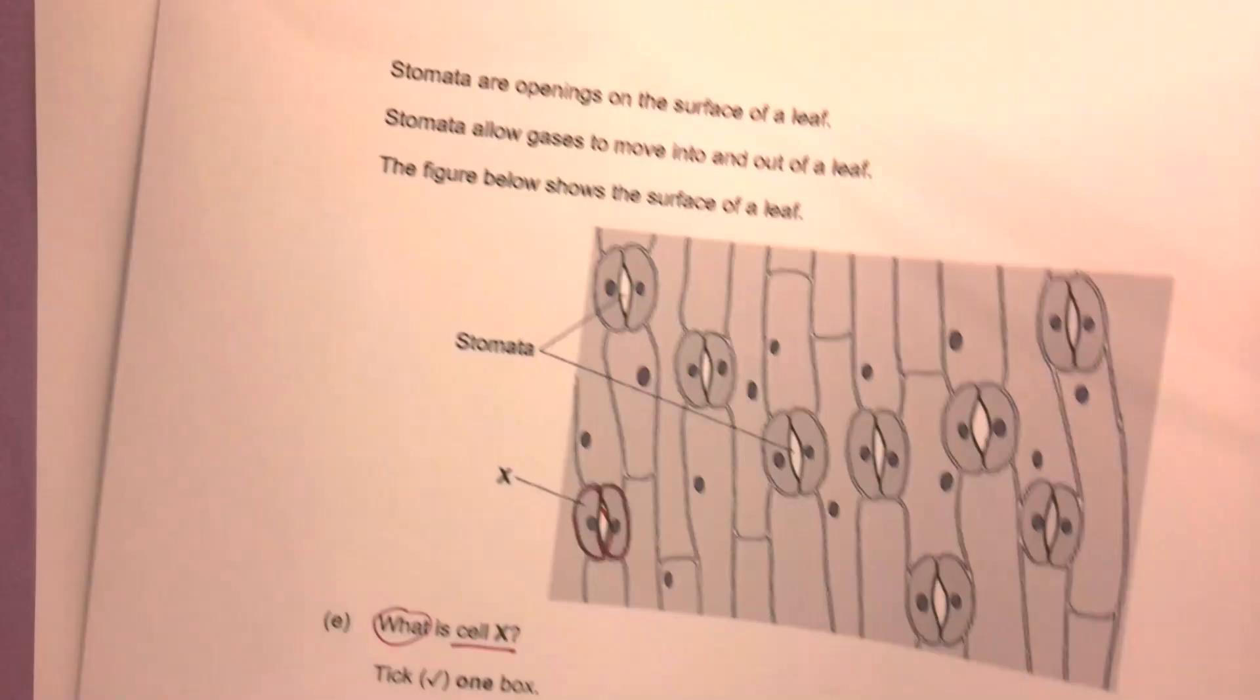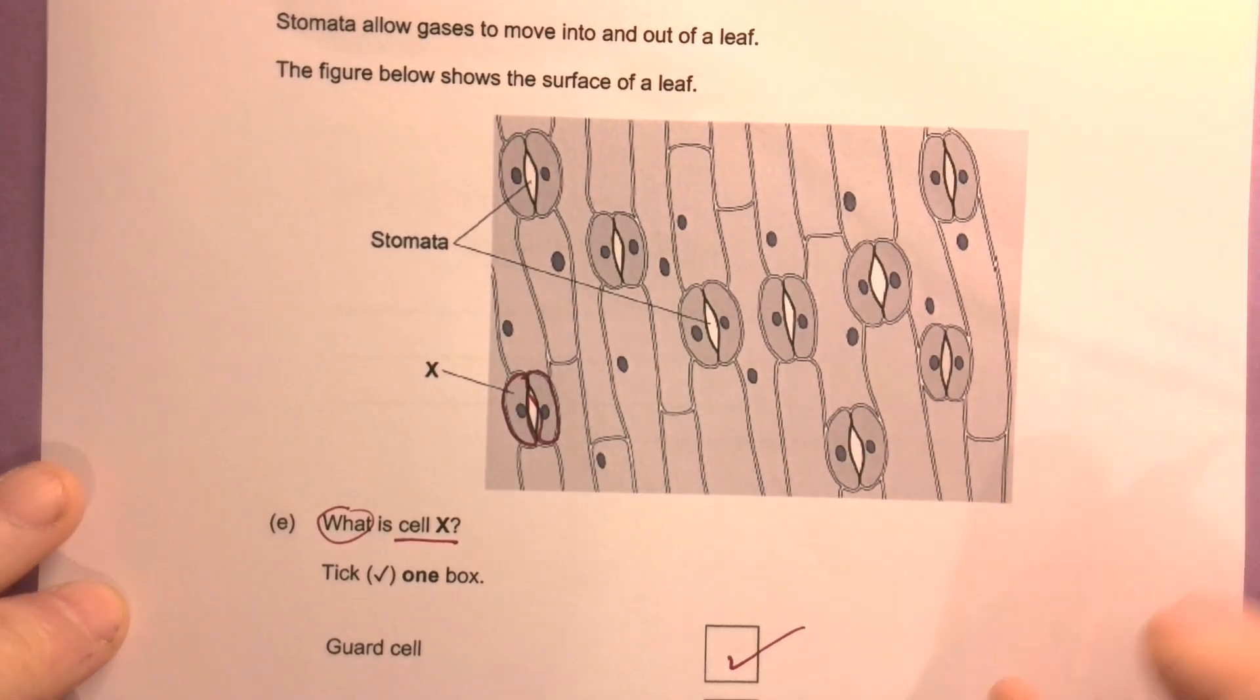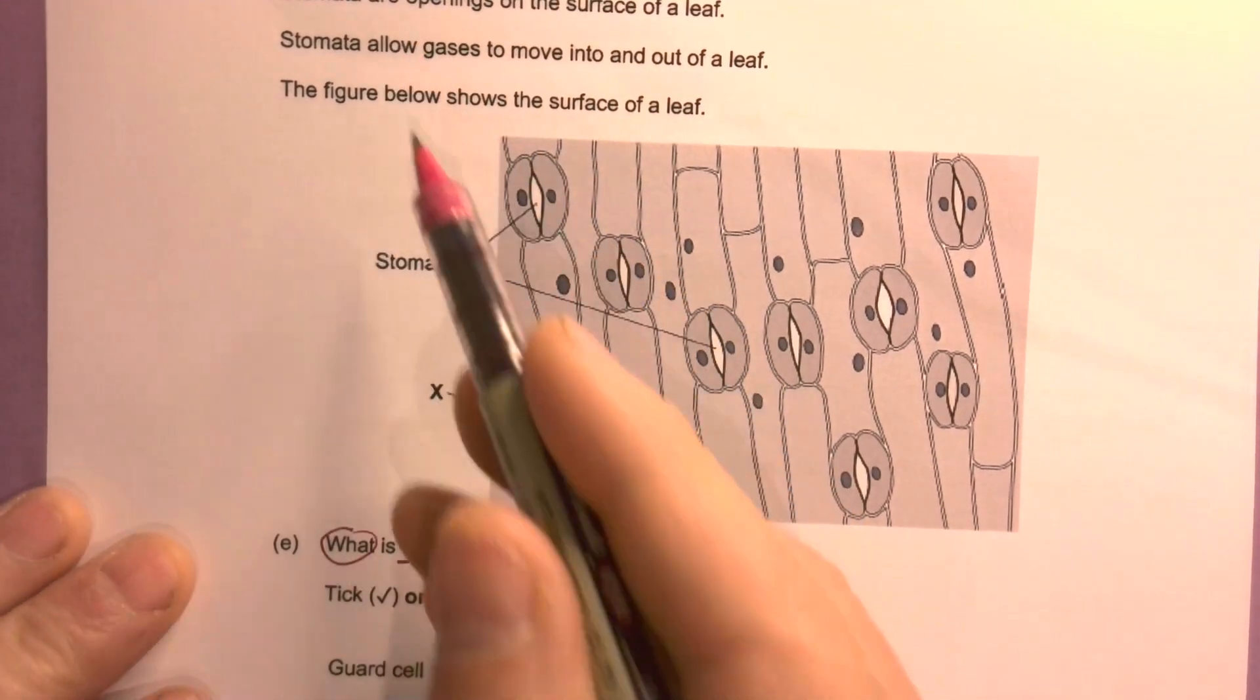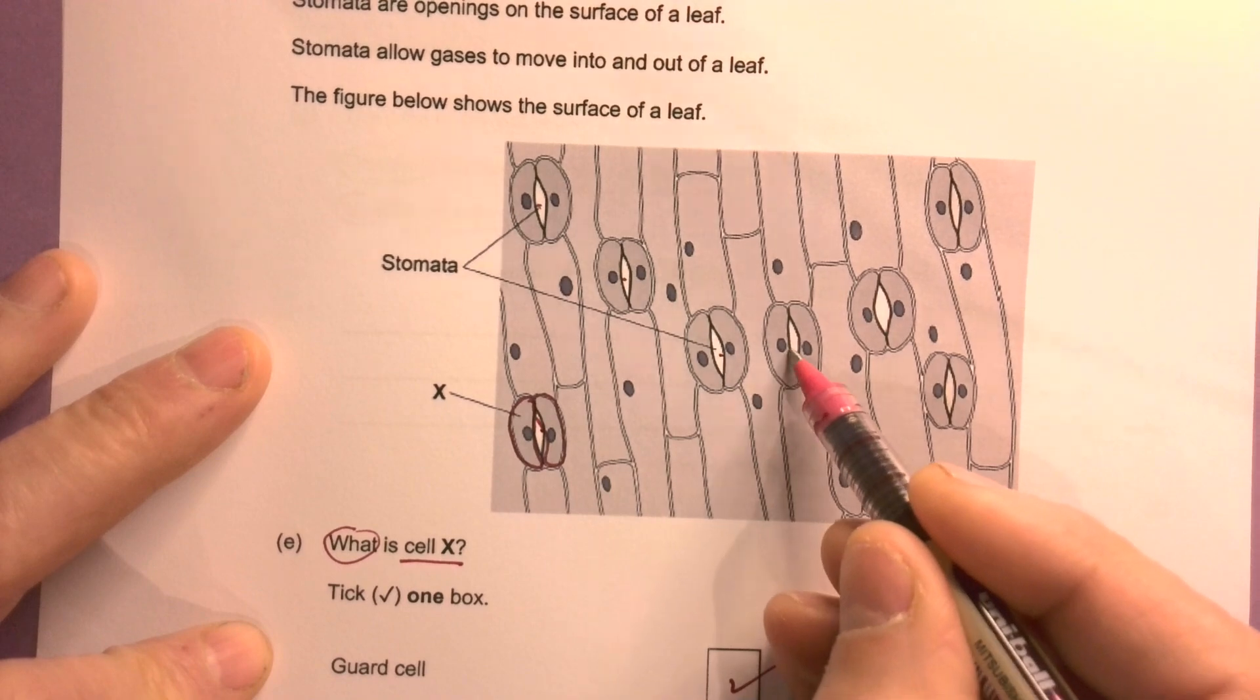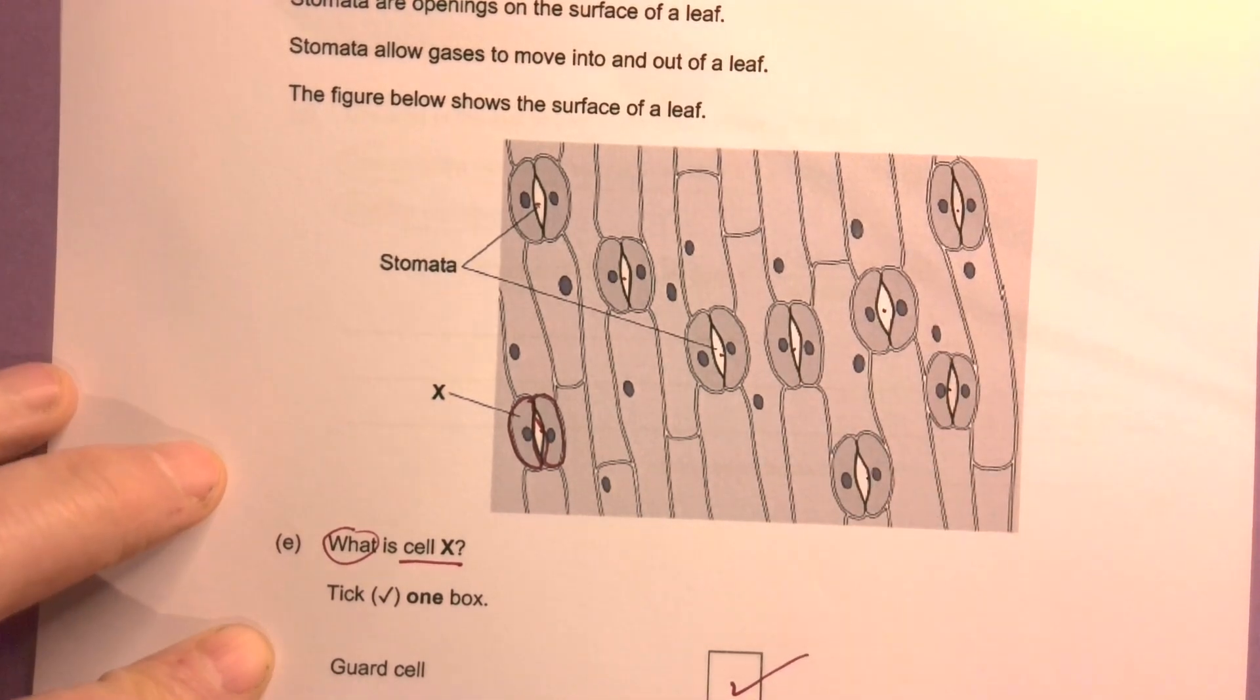Count the number of stomata. The stomata, remember, are the holes - the openings on the surface of the leaf. There's 1, 2, 3, 4, 5, 6, 7, 8, 9 of them in total.